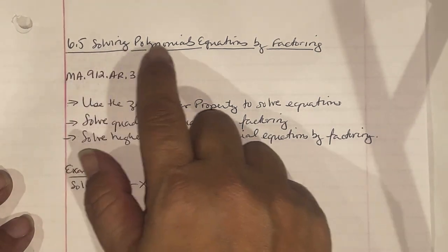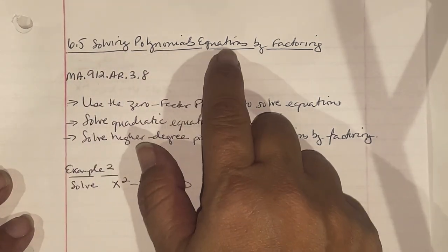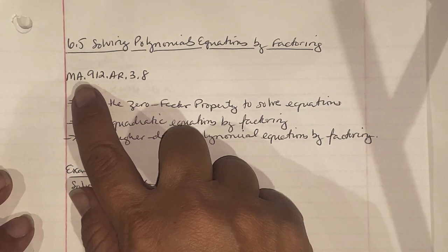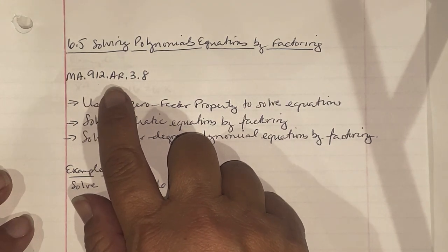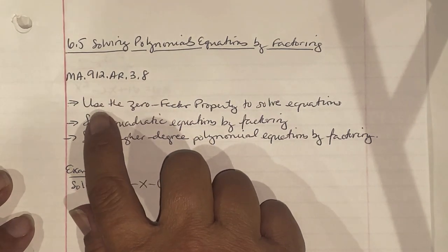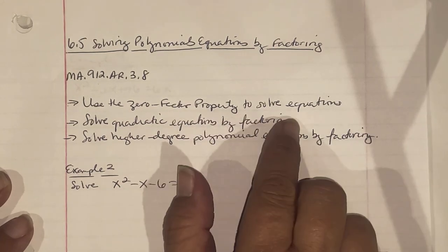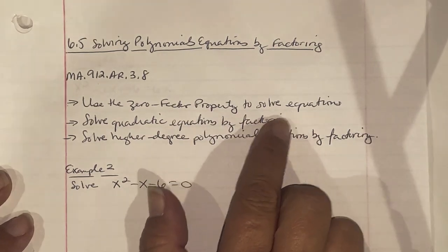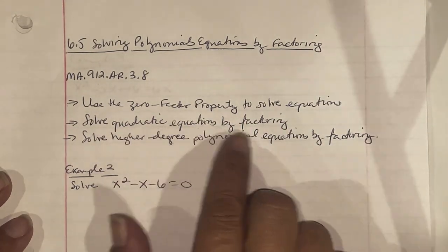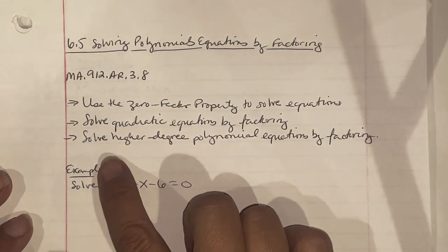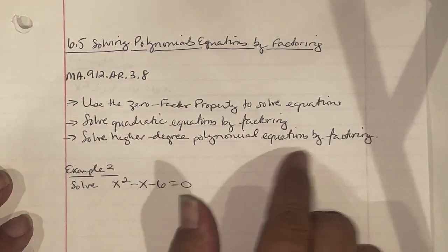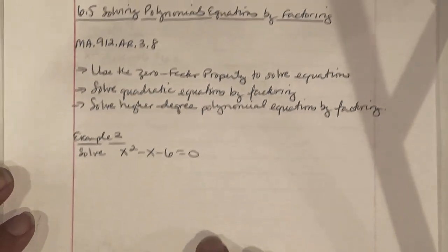6.5: Solving Polynomial Equations by Factoring — standard ma.912.ar.3.8. We're going to use the zero factor property to solve equations, solve quadratic equations by factoring, and solve higher degree polynomial equations by factoring.